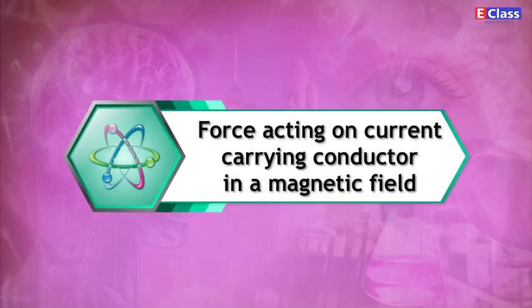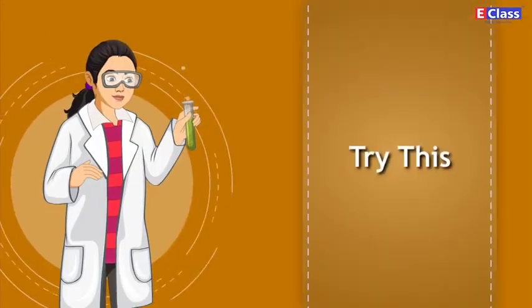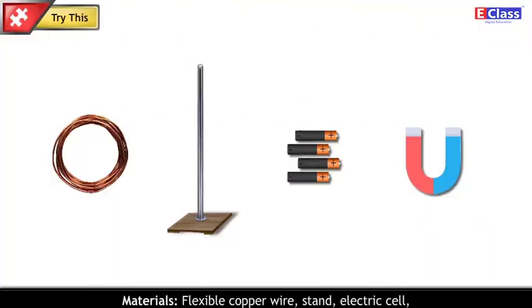Force acting on current carrying conductor in a magnetic field. Try this. Materials: Flexible copper wire, stand, electric cell, a horseshoe magnet with a strong magnetic field.